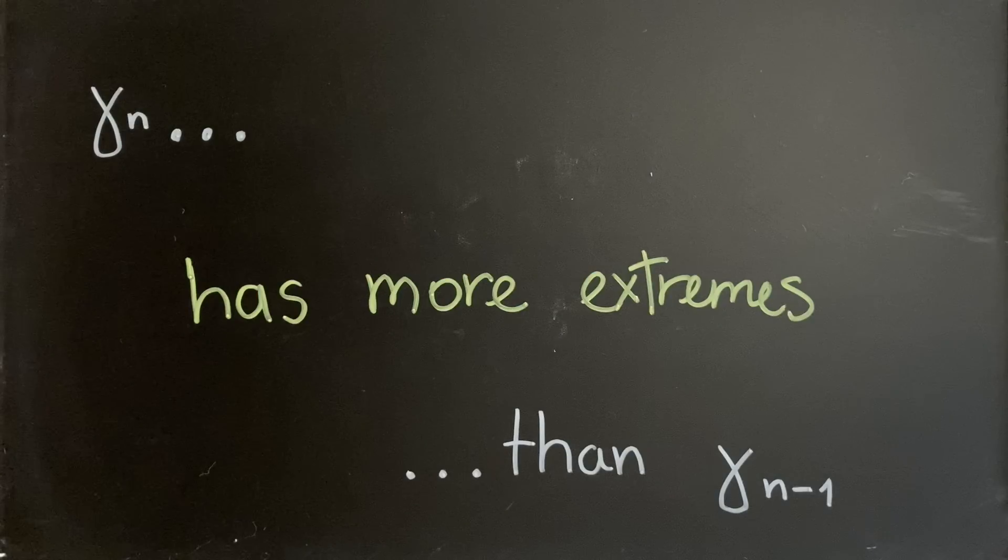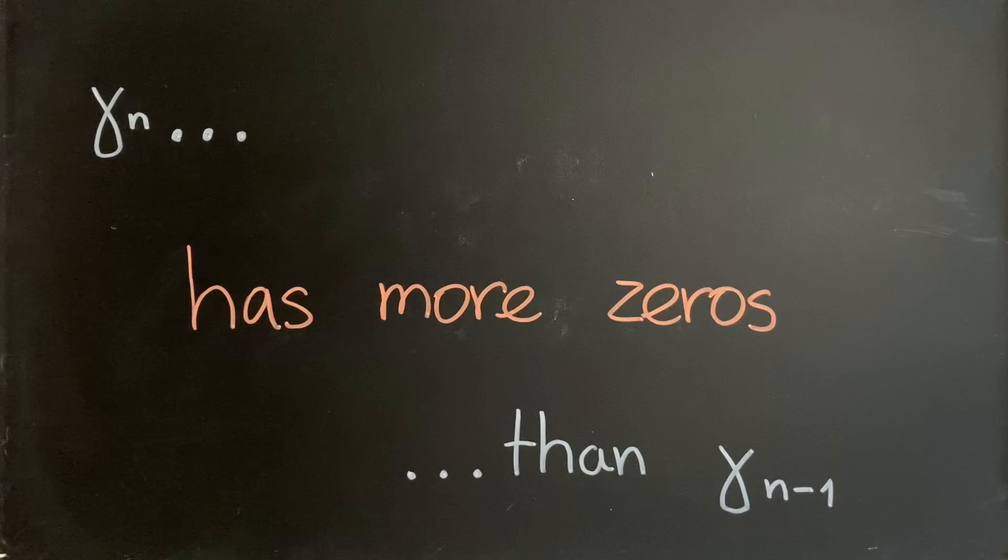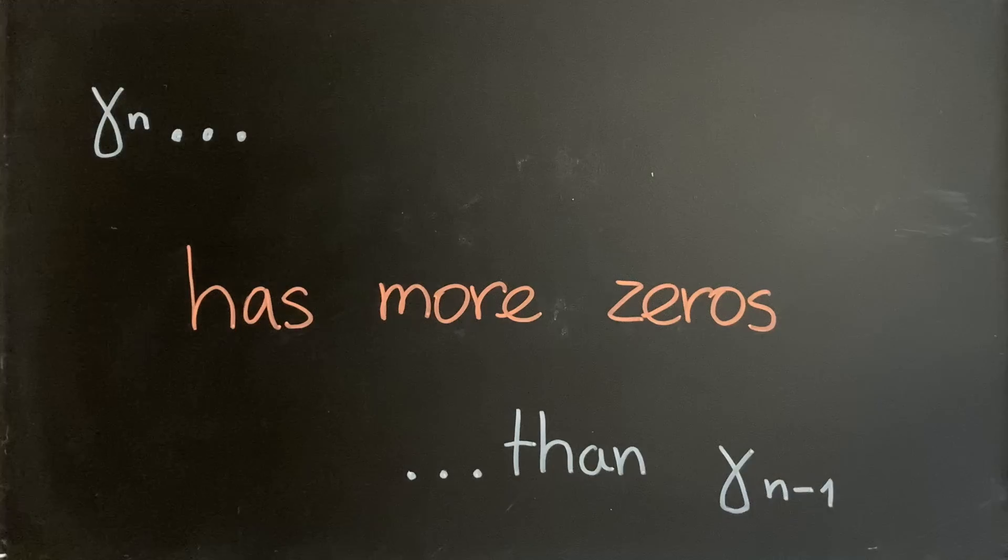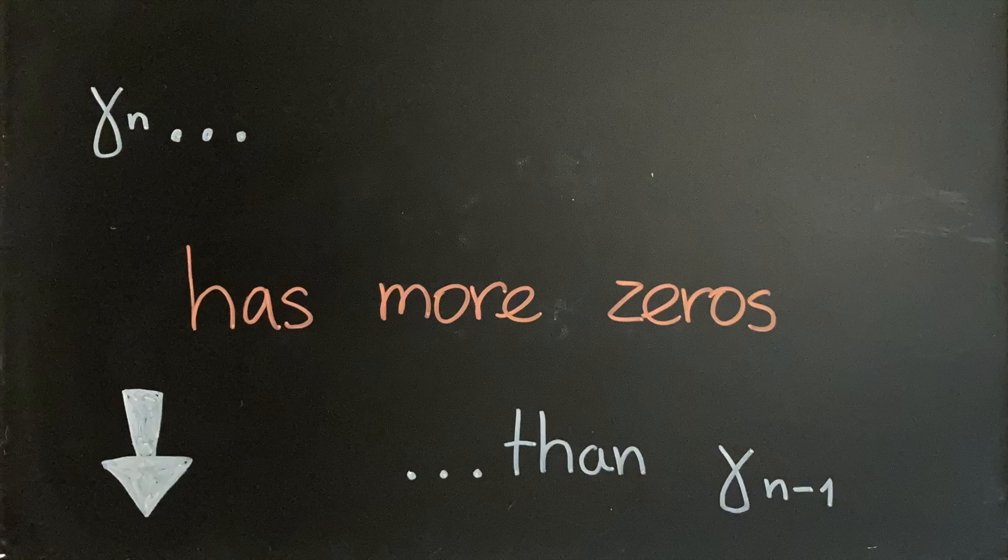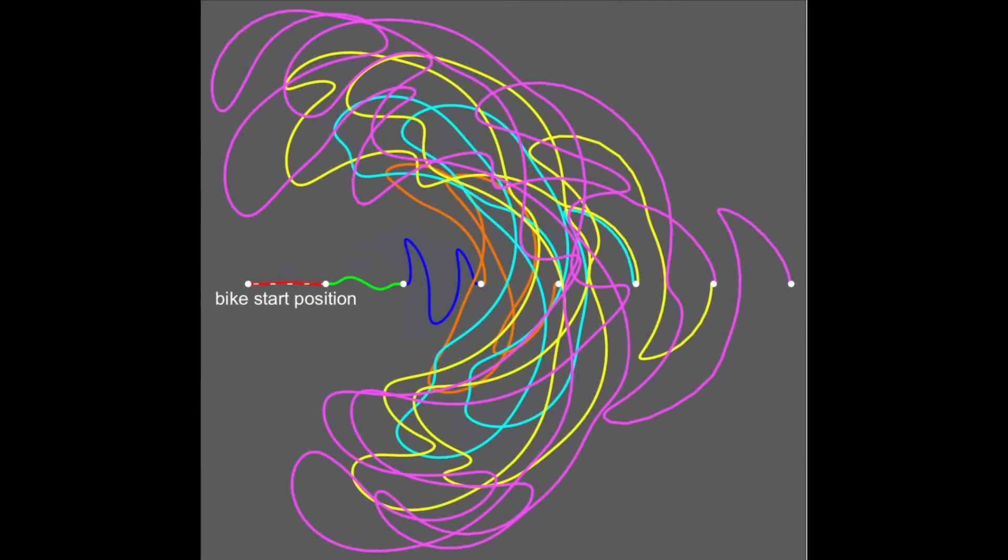Every iteration of such a path is longer than the previous one, has more local extremes, and more intersections with the x-axis. Check the description for a link to the paper containing proofs of these properties. Also, here are the first seven iterations of a plausible seat curve generated by Stan Wagen with Mathematica.